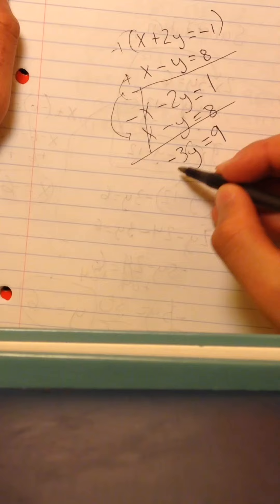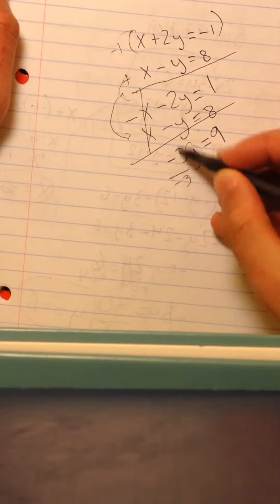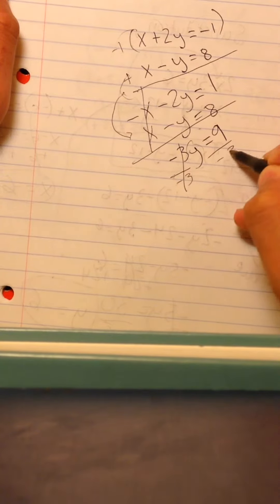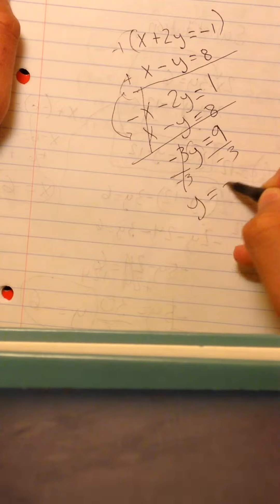Then, to find the value of y, just divide by negative 3, cancel out, divide by negative 3, then y is equal to negative 3.